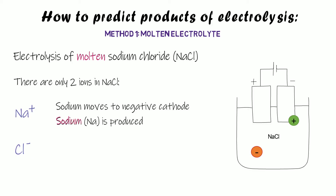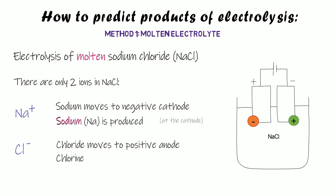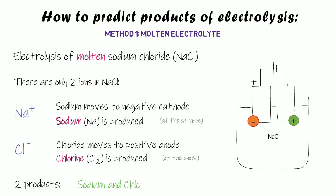On the other hand, our negative chloride ions are going to be attracted to the positive anode. The chloride ions move to the positive anode and when they get there they turn back from ions into atoms, forming chlorine. So for the electrolysis of molten sodium chloride we produce two products: sodium and chlorine. When you're predicting products for a molten electrolyte, all you need to do is decide what the electrolyte is made up of — those two things are what it will split up into.